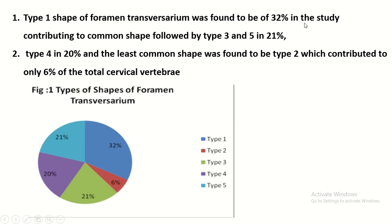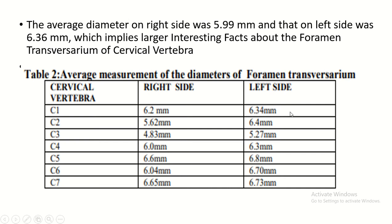Type 5 is elliptical with the main diameter oblique from left to right. Type 1 shape was found to be 32% in the study, making it the most common shape, followed by Types 3 and 5 at 21%. The average diameter on the right side is 5.99 mm and on the left side is 6.36 mm, implying the left side is larger.